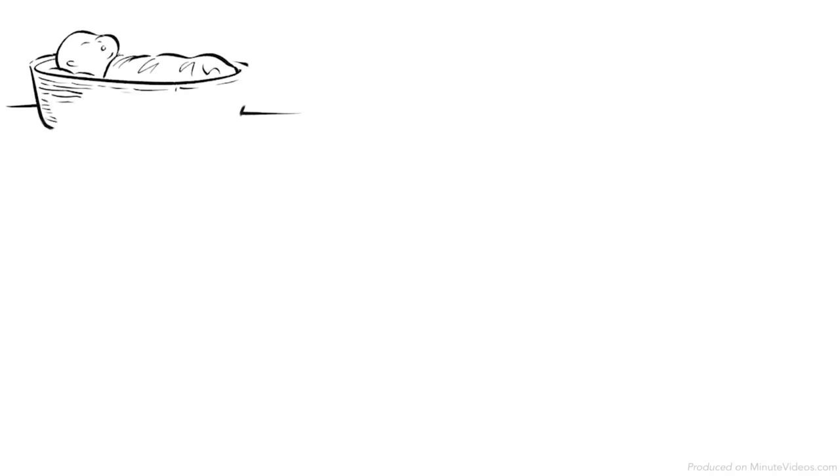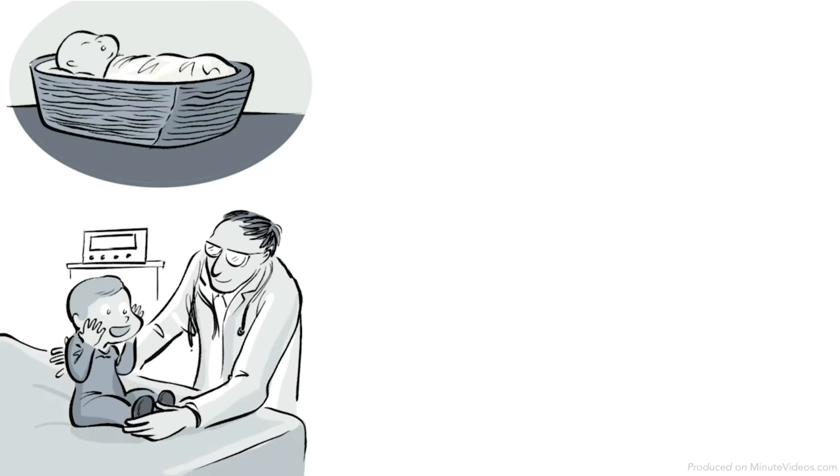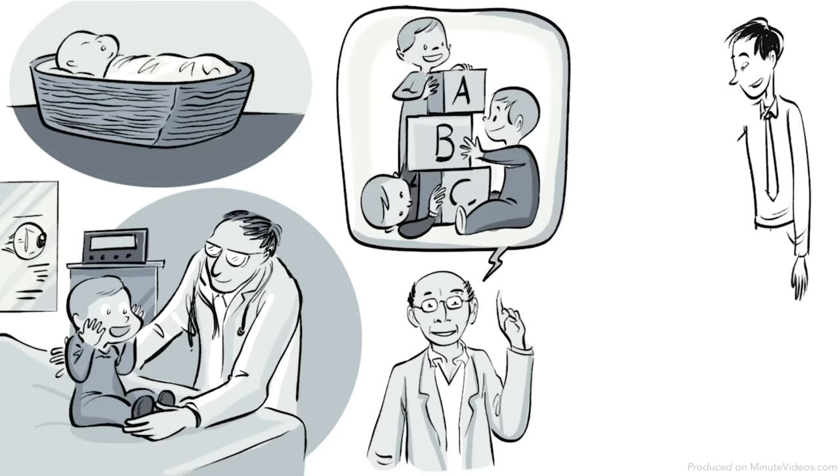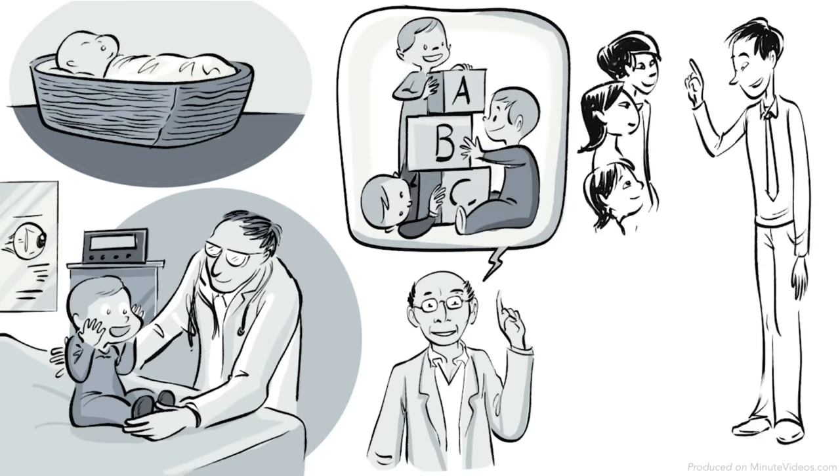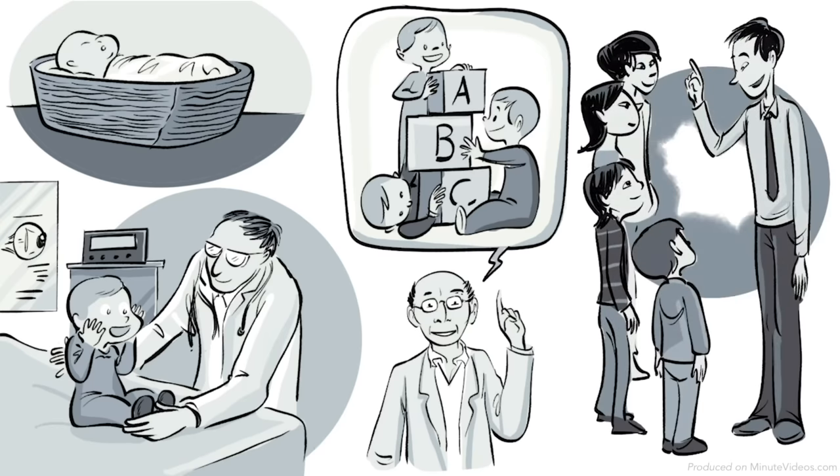Jerome Bruner was born blind in New York City in 1915. At age two, modern medicine restored his vision. Later, he returned the favor by becoming a pioneer in cognitive development. He believed that any subject can be taught in an intellectually honest form to any child at any stage of development.